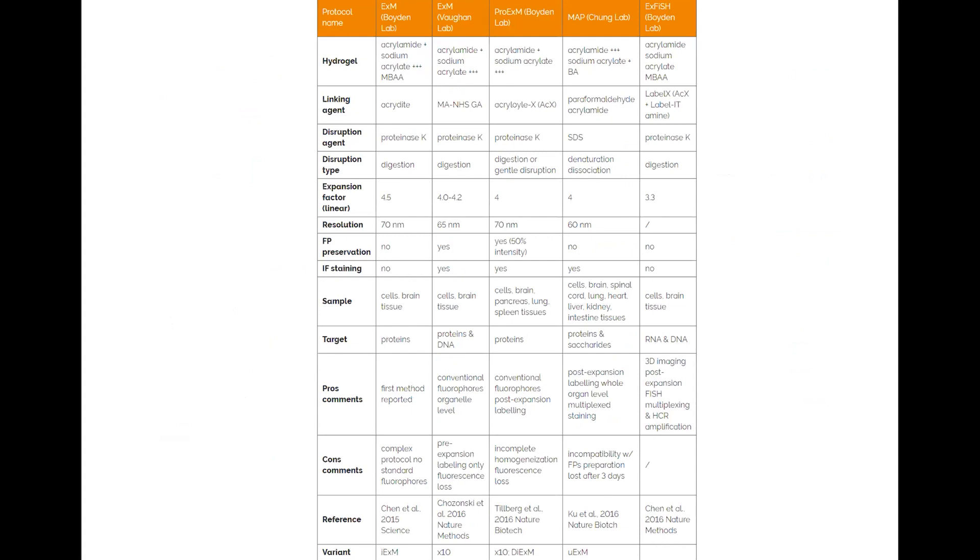Here is a more limited selection of them. One of the things you want to look at for your sample is, are you going to be using fluorescent proteins? Do these need to be preserved in some way? Or are you doing fluorescent staining? And furthermore, are you looking for proteins, DNA, saccharides, RNA? So knowing how you're going to label and what you want to label is key in deciding which expansion microscopy protocol will be best for you.